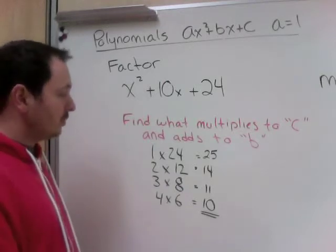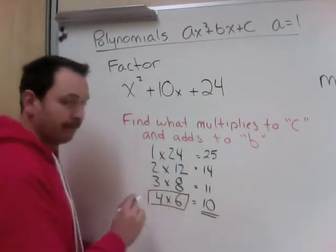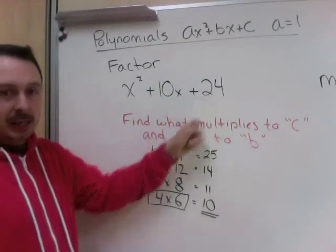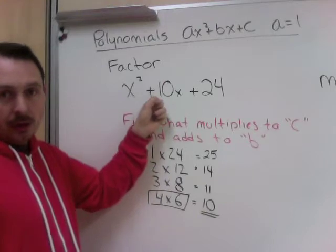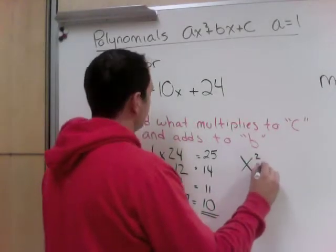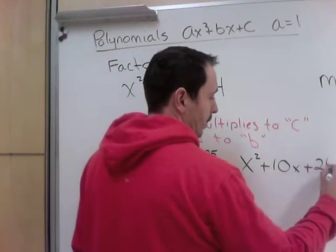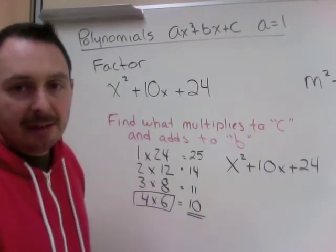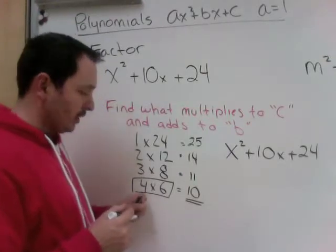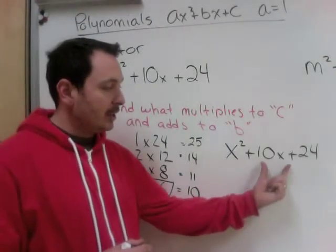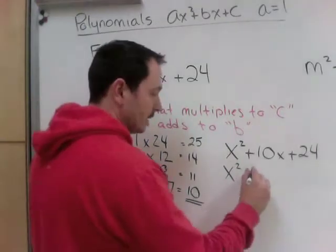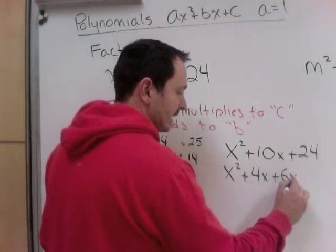So what we're going to do now is we're going to use 4 and 6. Because 4 and 6 are the two numbers that when multiplied equal c, and when added equal b. Using the 4 and the 6, we're going to break our middle term up into those two. So, 10 is 4 plus 6, so 4x plus 6x plus 24.